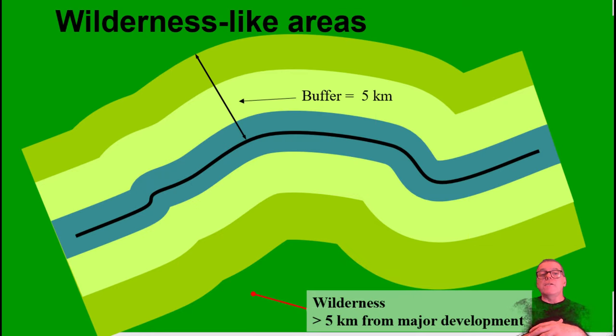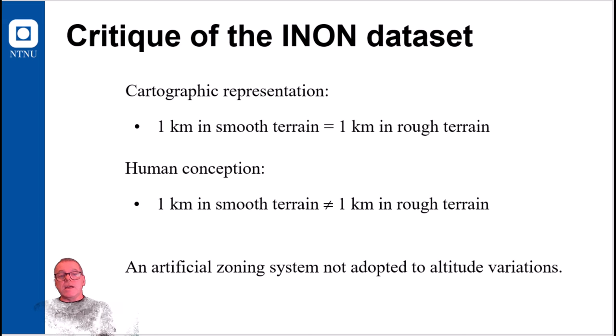And then finally, what is outside five kilometers from all this development is what they call wilderness-like areas. Of course, there has been some critique towards this dataset, because the cartographic representation equals one kilometer in smooth terrain with one kilometer in very rough terrain. Because this is a buffer which does not take any consideration about altitude variation.